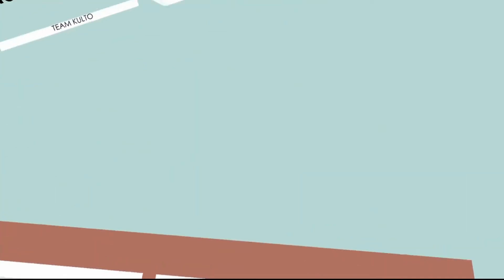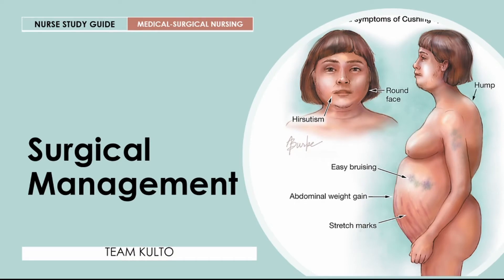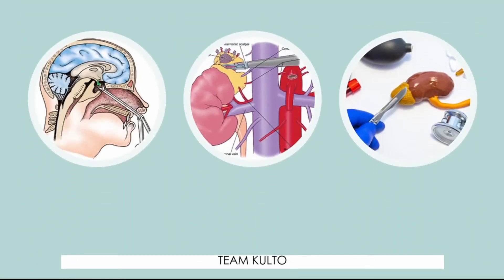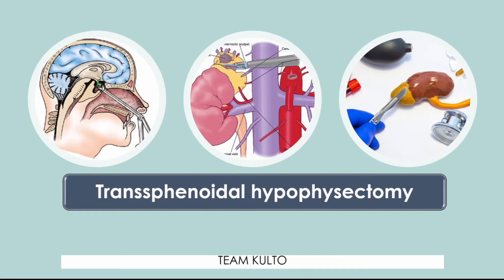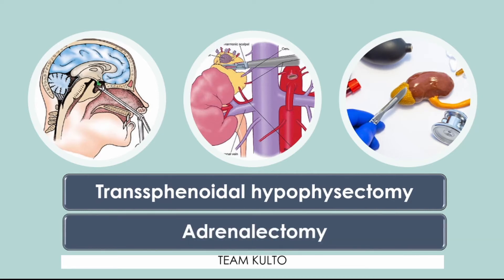For surgical management, removal of the adrenal or pituitary gland offers a greater success rate for patient recovery. The transsphenoidal needle hypophysectomy is the treatment of choice if Cushing's syndrome is caused by pituitary tumors, with an 80% success rate. Adrenalectomy — removal of the adrenal gland — is the treatment of choice for patients with primary adrenal hypertrophy, where the enlarged adrenal glands are removed.